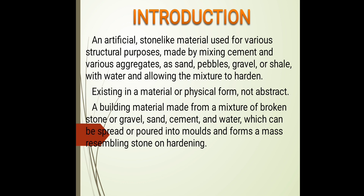In civil engineering terms, concrete can be spread or poured into molds and forms a mass resembling stone on hardening. In general words, concrete is a mixture of cement, fine aggregates, coarse aggregate, water, and some admixtures. By mixing those materials properly, we can get a concrete or concreting material, and by hardening it we obtain the final product.